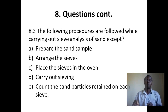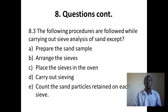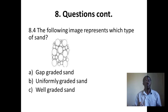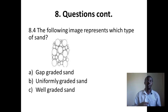Question 3: The following procedures are followed while carrying out the sieve analysis test of sand, except: A) prepare the sand sample; B) arrange the sieves; C) place the sieves in the oven; D) carry out sieving; E) count the sand particles retained on each sieve. Question 4: The following image represents which type of sand? A) gap graded sand; B) uniformly graded sand; C) well graded sand. Thank you very much.